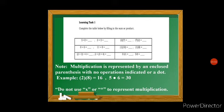Note that multiplication is represented by an enclosed parenthesis with no operation indicated. For example, (2)(8) equals 16, and (5)(6) equals 30. Do not use x or asterisk to represent multiplication because we are now in algebra, and in algebra, x is considered a variable.